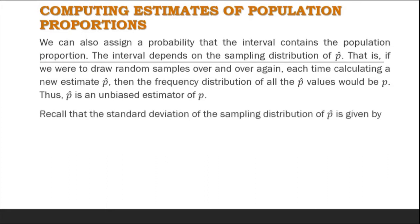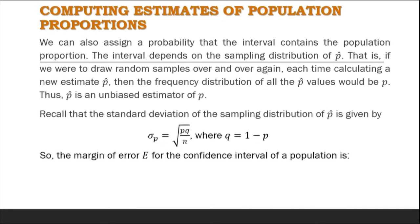Recall that the standard deviation of the sampling distribution of p-hat is given by sigma sub p, equal to the square root of p times q all over n, where q is equal to 1 minus p. So the margin of error e is equal to z sub alpha over 2 times the square root of p times q all over n, approximately using the estimators of p and q.